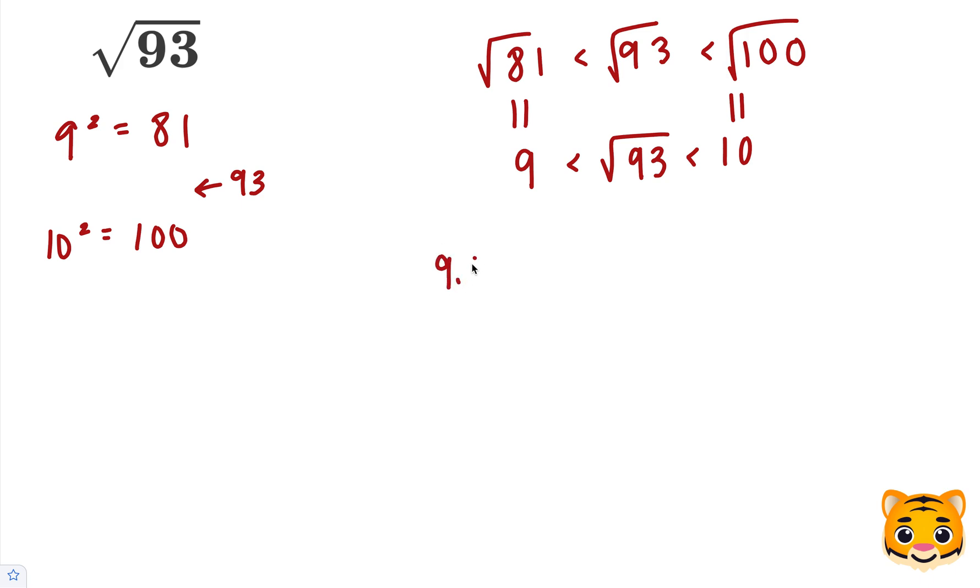Let's try out 9.6 squared, which is 9.6 times 9.6. 6 times 6 is 36, carry the 3. 9 times 6 is 54, plus 3 is 57. Add our 0. 9 times 6 is 54, carry the 5. And then 9 times 9 is 81, plus 5 is 86.